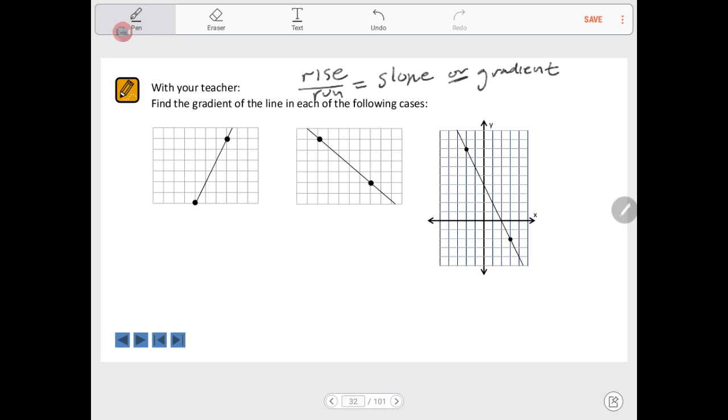Now, if a line is going up to the right like this, then we've got a positive gradient. If it's going down to the right, we have a negative gradient.